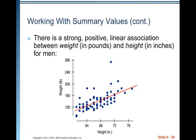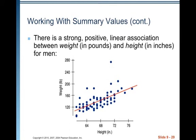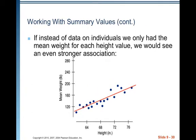There is a strong positive linear association between weight and pounds and height in inches for men. If instead of data on individuals, we only had the mean weight for each height value, we would see an even stronger association. So, over here you see a lot of individual variability. In the first scatter plot, you can see that there is a lot more scatter. But what they did was then they took, say, like at 64 inches, there's a whole lot of weights there. From well below 120 to almost 200. And so, they averaged them all together and they just took the average for each of the heights. There's much less variability there. You've got a much stronger association.